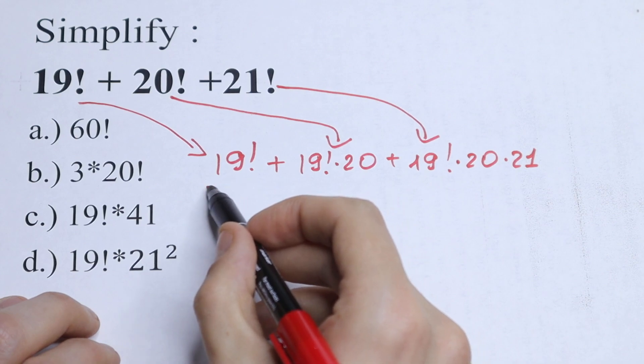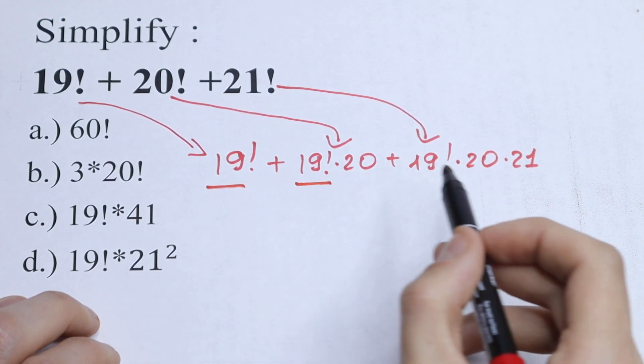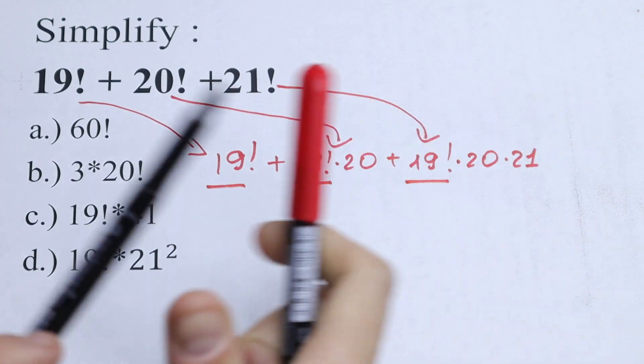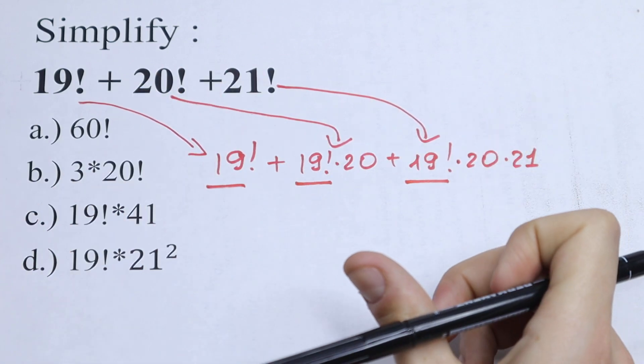But take a look what we will have right here. We have 19 factorial, we have 19 factorial right here and right here, so we can factor out this 19 factorial. So let's do this.